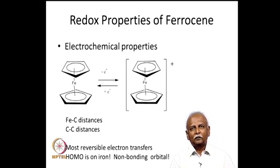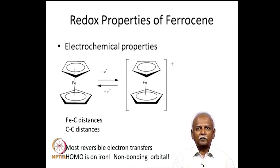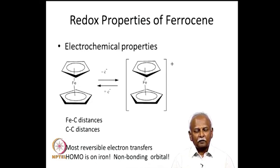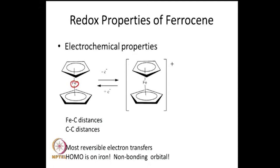Let us start with the special properties of ferrocene which make it suited for electrochemical applications. The molecular orbital of ferrocene is such that the highest occupied molecular orbital is completely delocalized on the iron atom of the ferrocene. So it is at the iron atom that the electron density is maximum. If you remove an electron, it is the iron which is depleted of the electron primarily, and it is in a non-bonding orbital, not interacting significantly with the cyclopentadienyl rings.